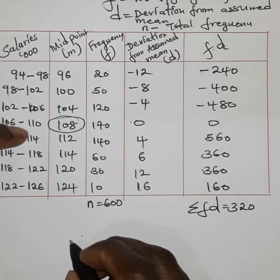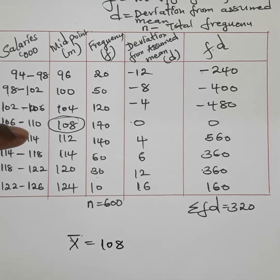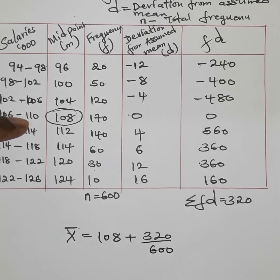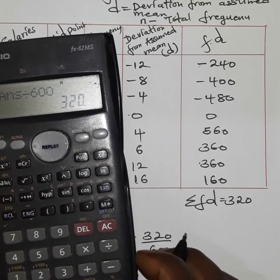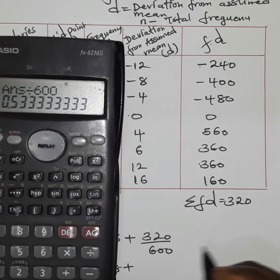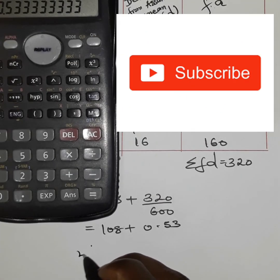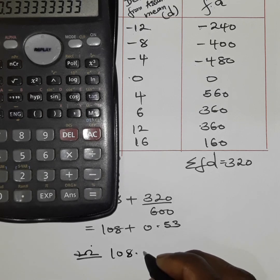Using our formula, x̄ = A + Σfd / n = 108 + 320 / 600 = 108 + 0.53. Therefore, our arithmetic mean is approximately 108.53.